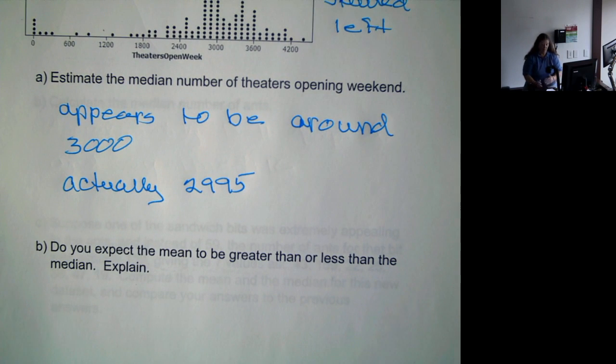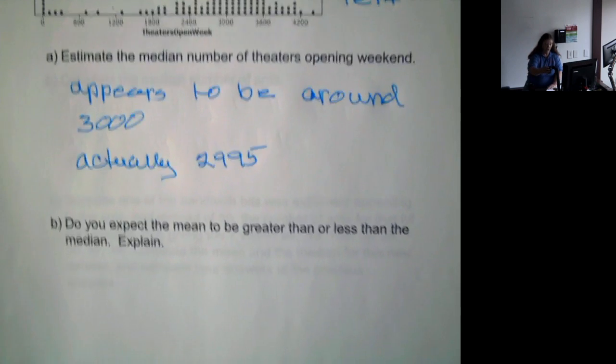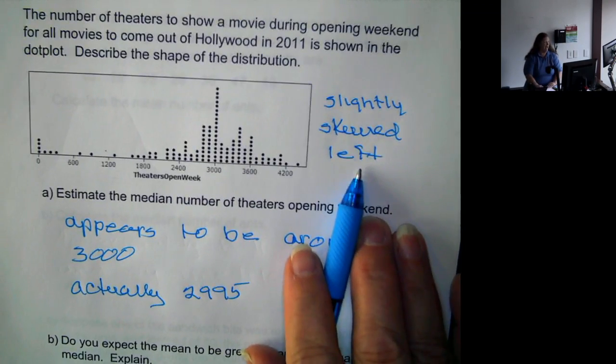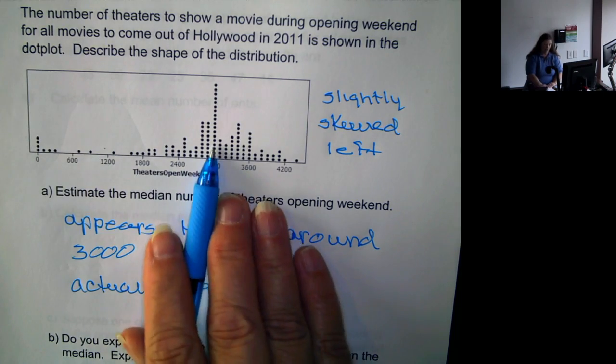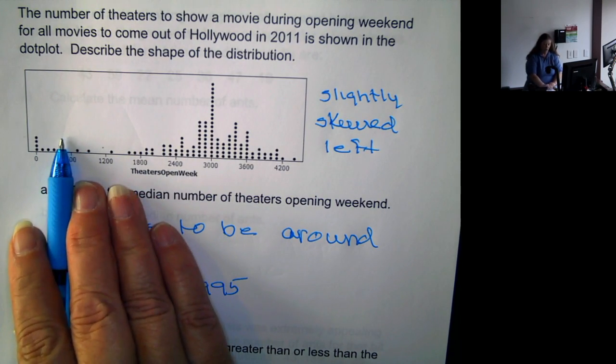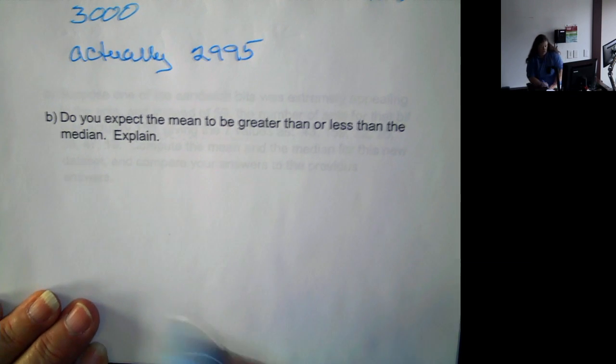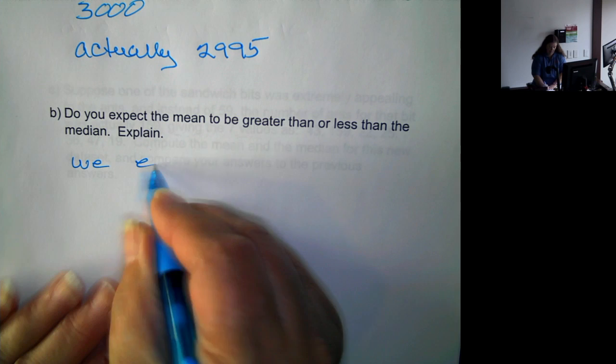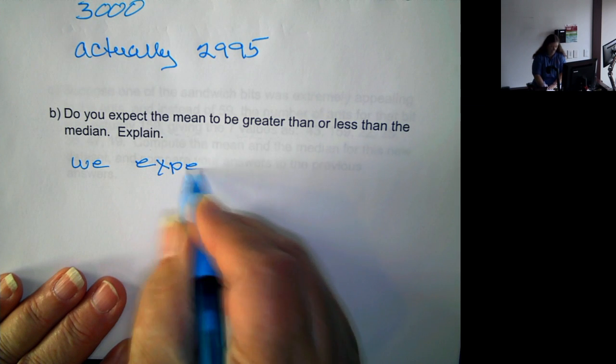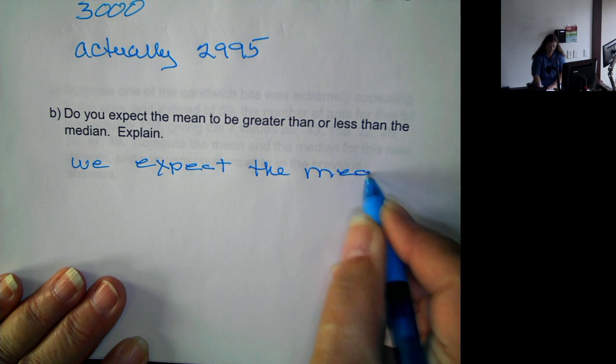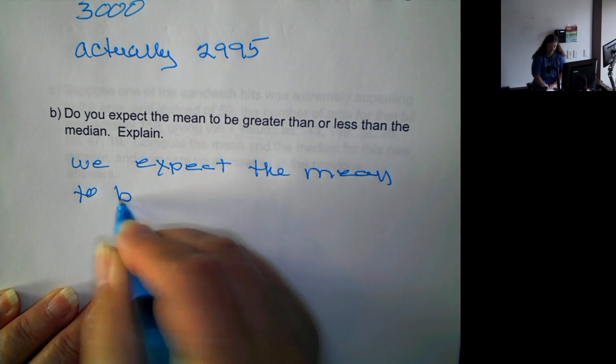Now, do we expect the mean to be greater than or less than the median? Well, remember this has to do with the skewness of the distribution. Since this distribution is skewed to the left, that means these smaller numbers are going to be moving the mean towards the lower end. So we expect the mean to be less than the median.